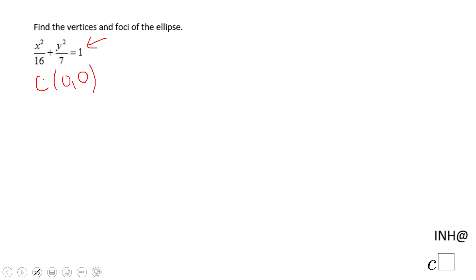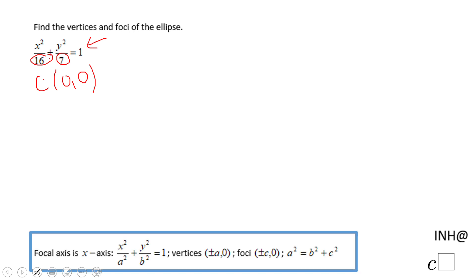The next question you want to ask yourself is about the focal axis. Is the focal axis the x-axis or the y-axis? And because this is 16 and this is 7, 16 is larger than 7, so the focal axis will be the x-axis, y equals 0 if you want to say it like that. That tells me I'm gonna use this form that you see here. That will allow me to find the vertices and the foci.